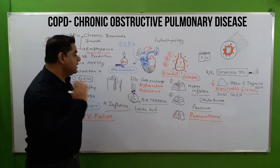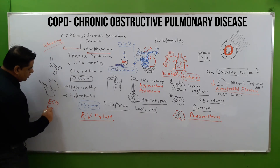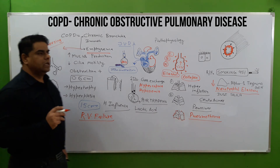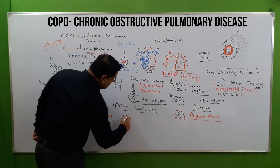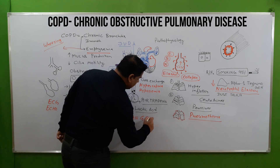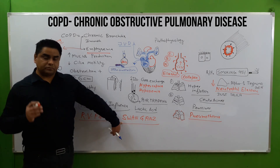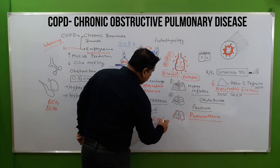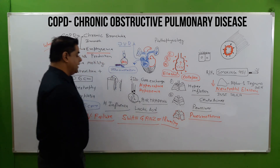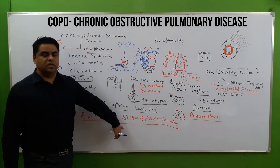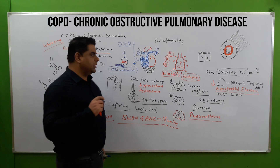Jugular vein distension can be checked by ECG and ECO. One gold standard test is Swan-Ganz catheterization, where a catheter is placed into the right ventricle to check right ventricular pressure, which should not exceed 18 mmHg, and to check for backflow.